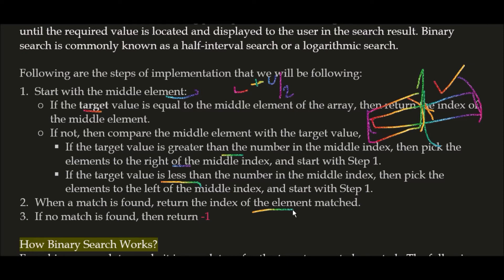When a match is found, return the index of the element matched. As soon as your target value's index matches, you print that value and return its index location, and your program completes. If no match is found, then return minus one.